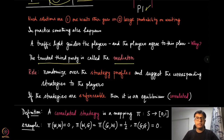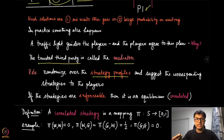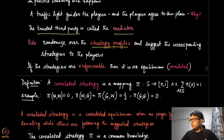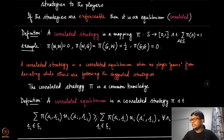We assume in the setup of correlated equilibrium that there exists a trusted third party, which we call a mediator. The players do not coordinate directly but through the mediator. The role of the mediator is to randomize over strategy profiles — not just over individual strategies, but over the whole strategy profile — and then suggest those individual strategies to each player.